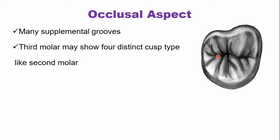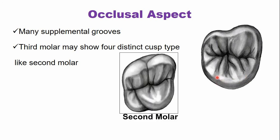Another pattern seen in third molars is four cusps like the second molar, where the lingual cusp is divided into two cusps — a mesio-lingual cusp and a smaller disto-lingual cusp — making the third molar appear more like the second molar.